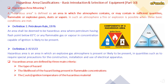Hazardous areas are defined by three main criteria: the type of hazard, the likelihood of the hazard being present in a flammable concentration, and the auto-ignition temperature of the hazardous material. The hazard will be in the form of gas, vapour, dust or fibre.